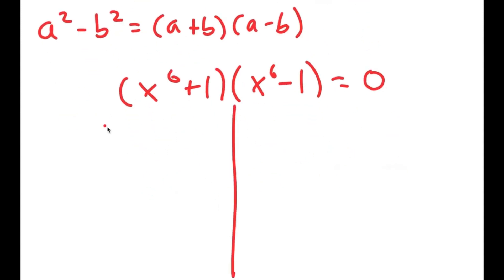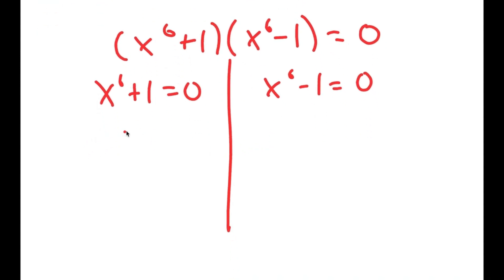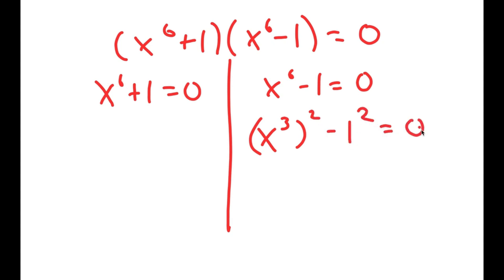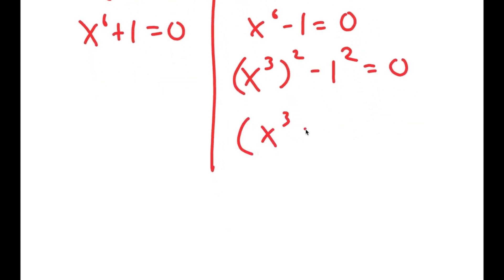This gives me two equations: x to the power of 6 plus 1 equals 0, and x to the power of 6 minus 1 equals 0. Now I'm going to do the same thing again. I'm going to rewrite x to the power of 6 minus 1 equals 0 as x to the power of 3 squared minus 1 squared equals 0, so I can use this property again and get x to the power of 3 plus 1 times x to the power of 3 minus 1 is equal to 0.